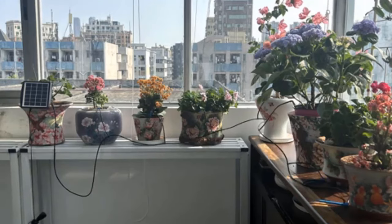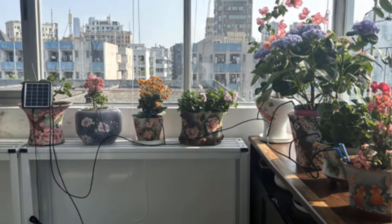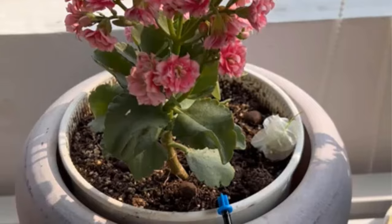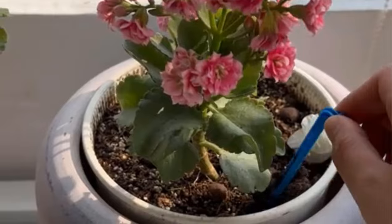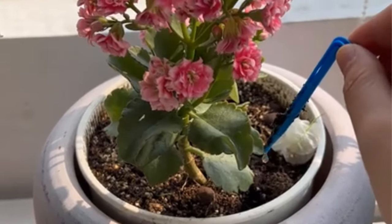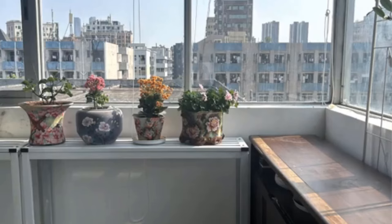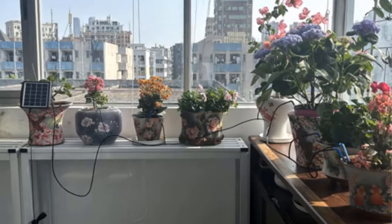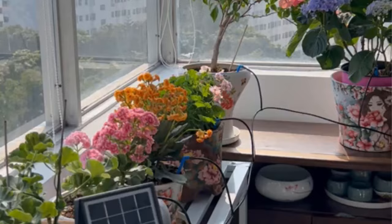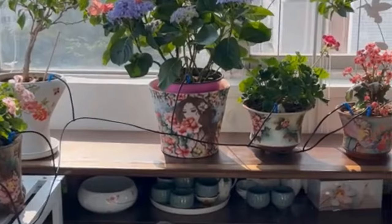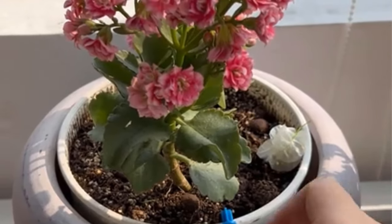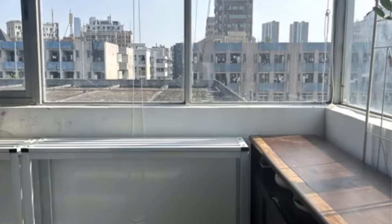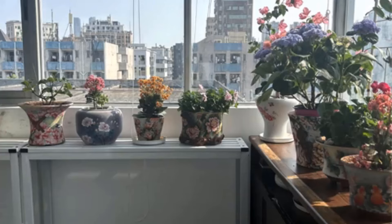At its core, the system consists of a solar-powered water pump that draws water from a reservoir or other water source. This pump is designed to deliver water directly to the plants through a network of drip irrigation tubing and emitters. The use of drip irrigation ensures efficient water distribution, minimizing waste and maximizing the effectiveness of each drop. One of the notable features of this system is its versatility and ease of installation. The DIY nature of the kit means that users can set it up without the need for professional assistance. Additionally, the system is capable of supporting a substantial number of pots, 10 to 15 pots, making it suitable for small to medium-sized gardens.